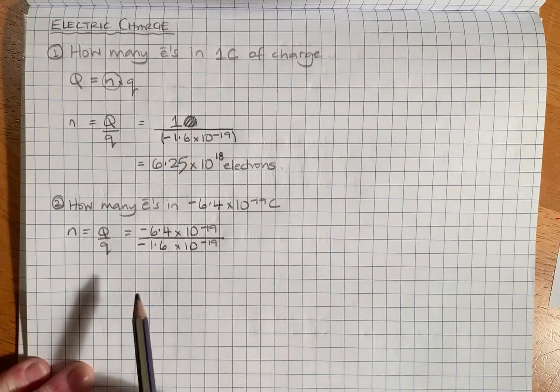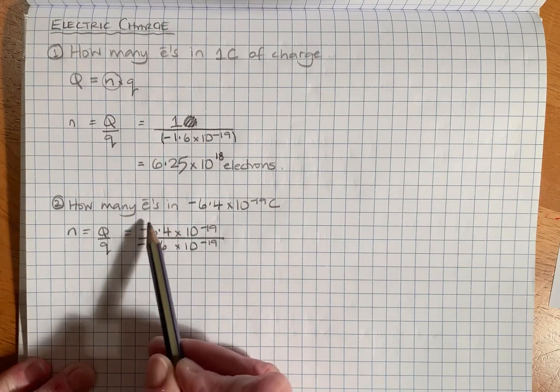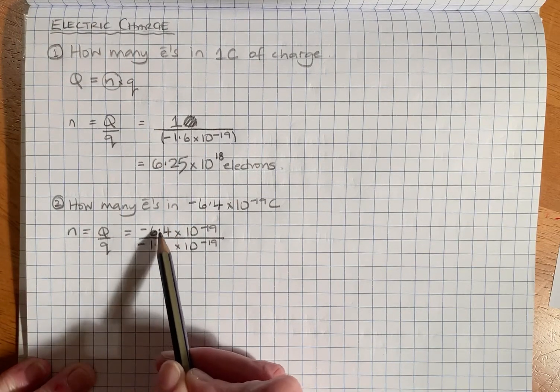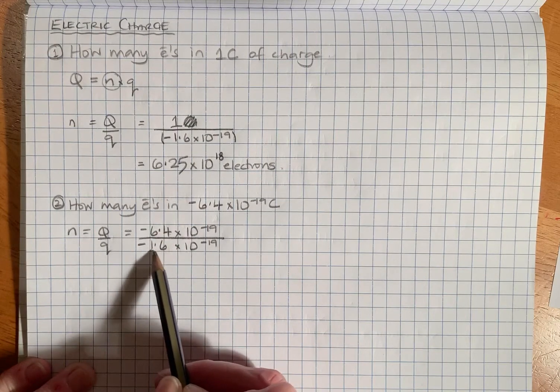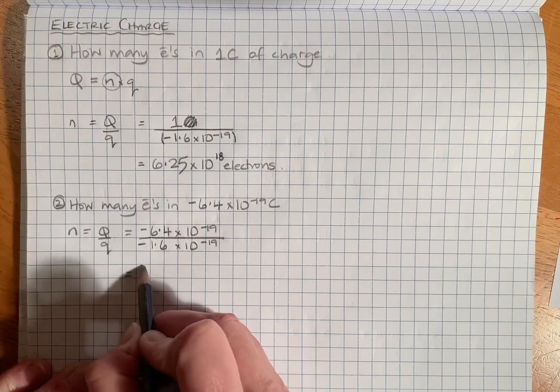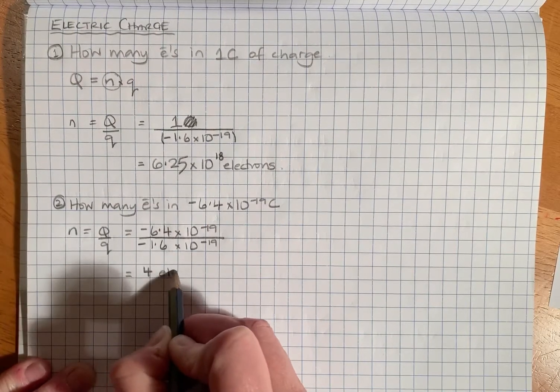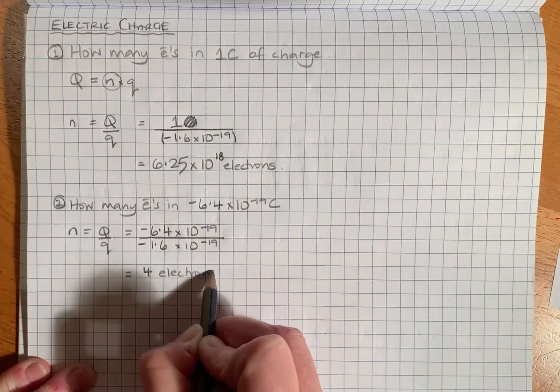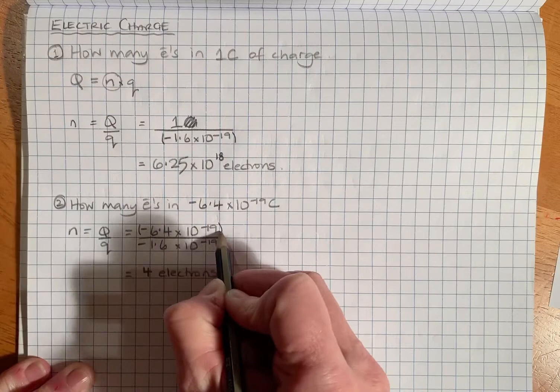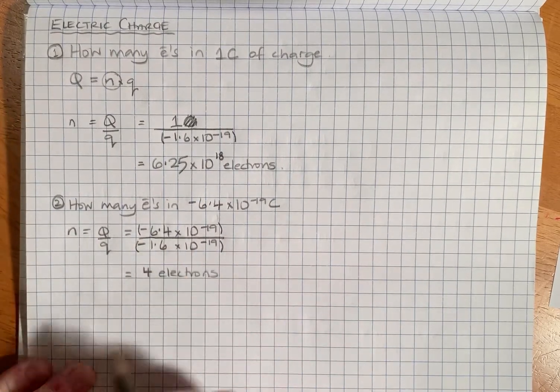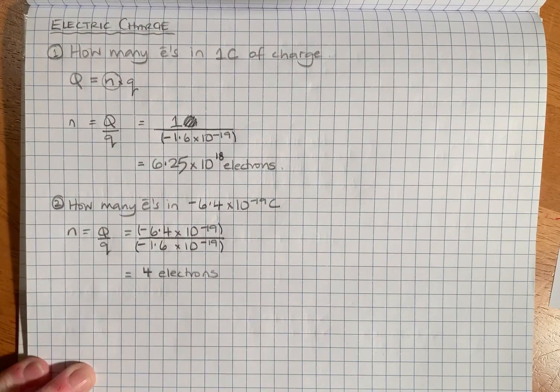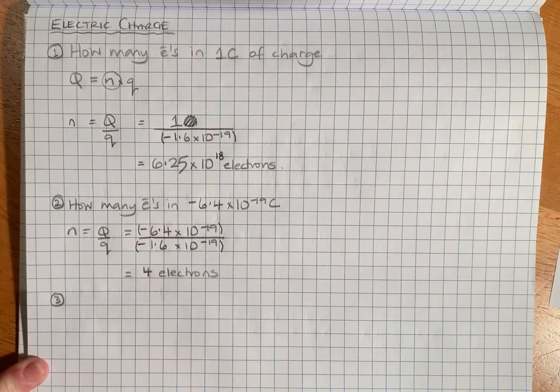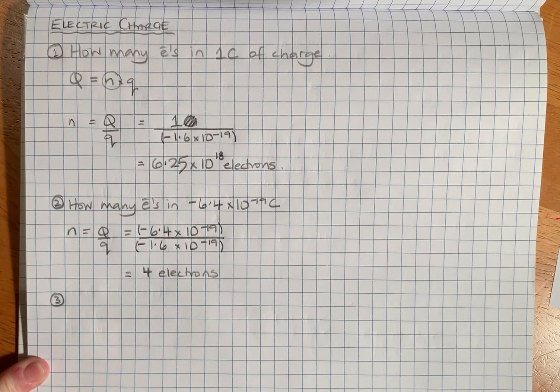If you like numbers you might look at these two and know that 64 is 4 lots of 16, so you would know that it is 4 electrons. If you didn't know that, make sure you put brackets around them before you put the division into your calculator. You should still come up with 4.